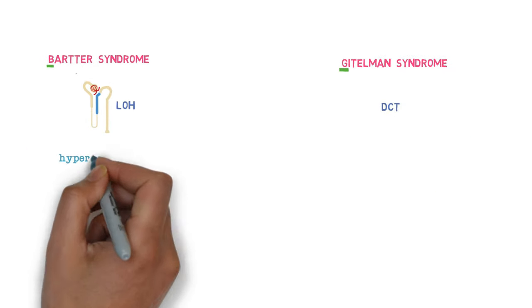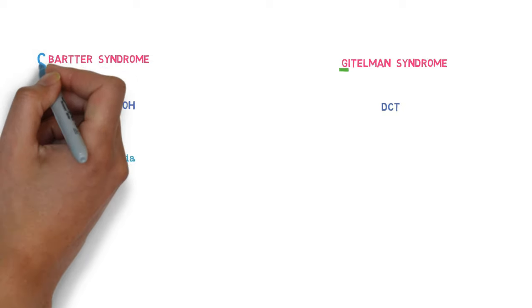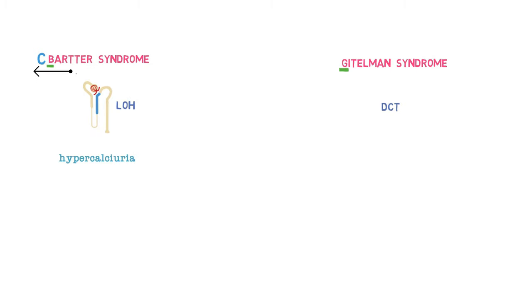Now, hypercalciuria is seen in Bartter syndrome which presents as nephrocalcinosis and renal rickets. You can also remember this by the spelling of Bartter itself. So, A, B and C. C here stands for hypercalciuria.